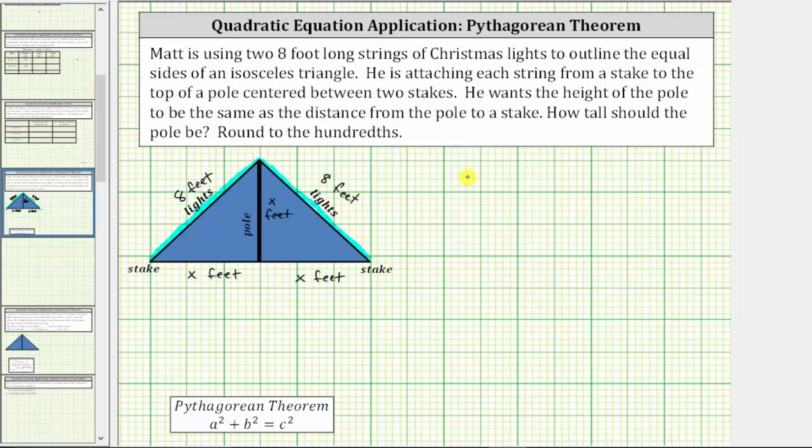Applying the Pythagorean theorem, we have x² + x² = 8². Simplifying, x squared plus x squared equals 64.